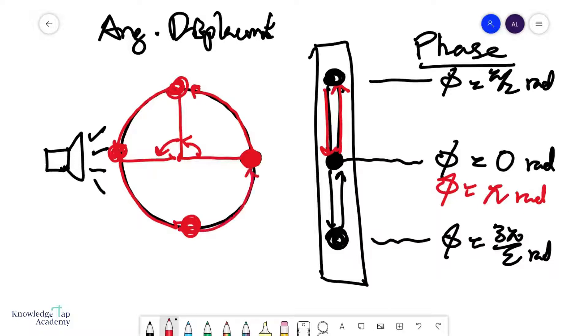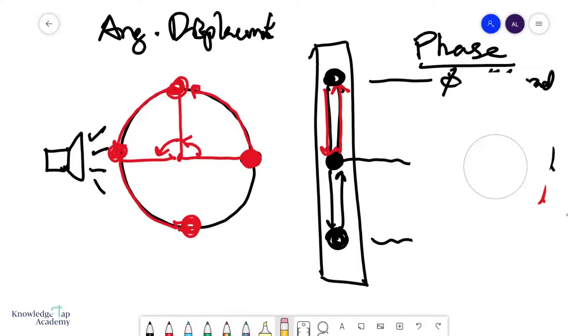And then we are back to the middle, very nice. And so you can see that phase simply describes a particular position of an SHM. And if you think of it as mapped to a circular motion, it really is quite simple.